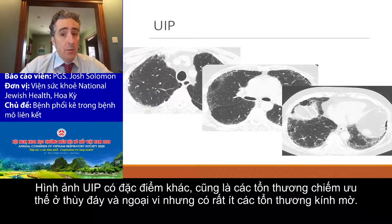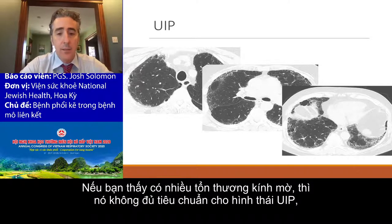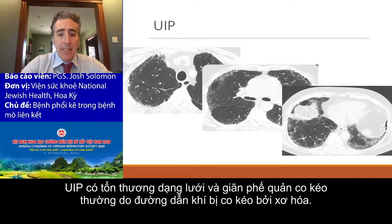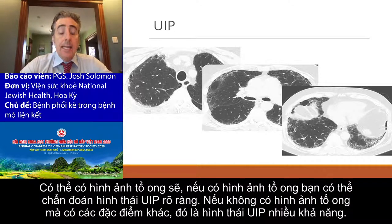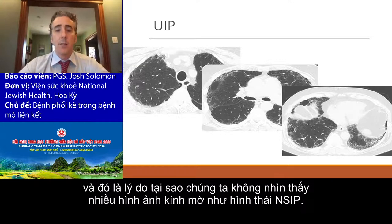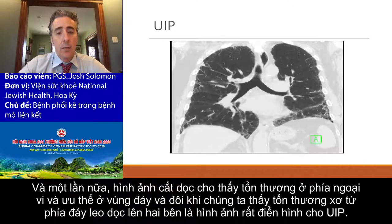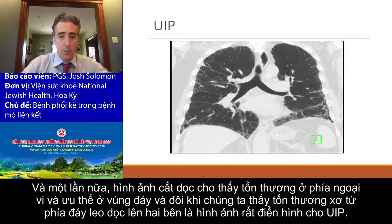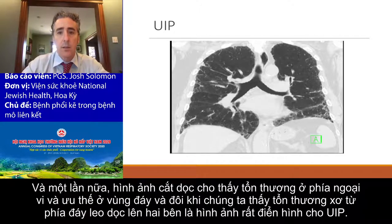UIP is different. It is also basilar and peripheral predominant, but has very little, if any, ground glass opacity. If you have a lot of ground glass, it doesn't qualify for UIP. It has reticulation and traction bronchiectasis — which is pulling open of those airways from fibrosis — and it can have honeycombing. If you have honeycombing, you have a definitive UIP pattern. If you don't have honeycombing but have all these other features, we call it probable usual interstitial pneumonia. That's why you don't see a lot of that ground glass abnormality we see in NSIP.